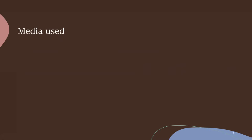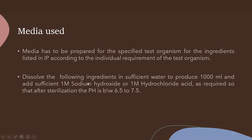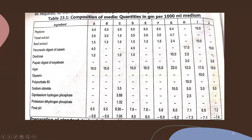The media used must be prepared for the specified test organism as per the ingredients given in the IP according to the requirements of the test organism. Media can be prepared by dissolving the specified ingredients and adjusting the pH using 1 molar sodium hydroxide or 1 molar hydrochloric acid. There are 10 media available, and you select the appropriate one for a particular microbiological assay.